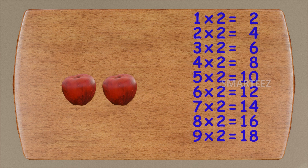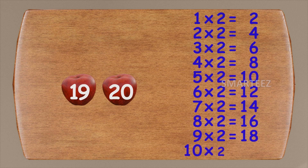Let's add two more — this will be nineteen and twenty. Ten times two is twenty. That's a lot of apples!